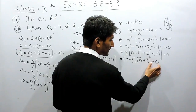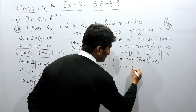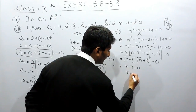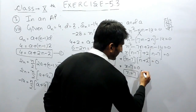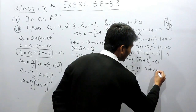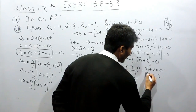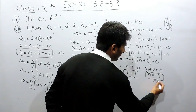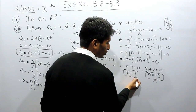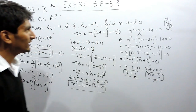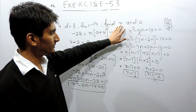Since n minus 7 is common in both terms, we get n minus 7 times n plus 2 equals 0. The multiplication of two terms equals zero means either term must be zero. If n minus 7 equals 0, then n equals 7. If n plus 2 equals 0, then n equals minus 2. Since the number of terms cannot be negative, there must be 7 terms in this AP.